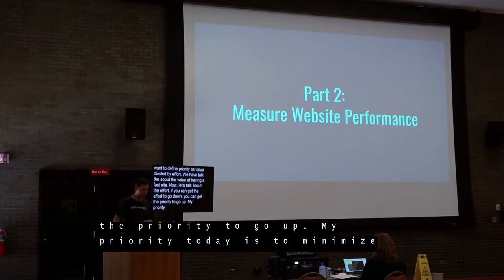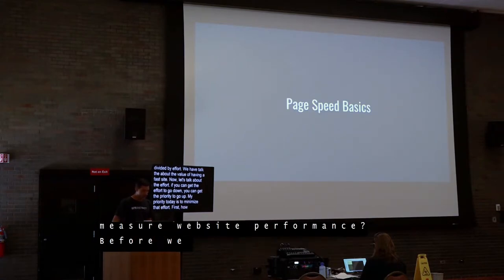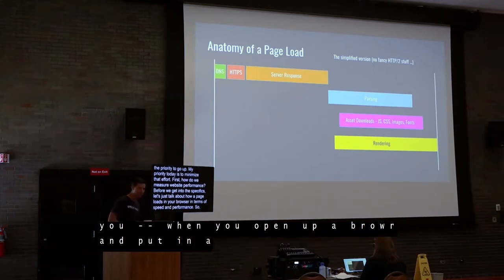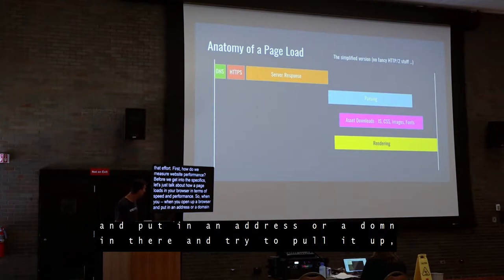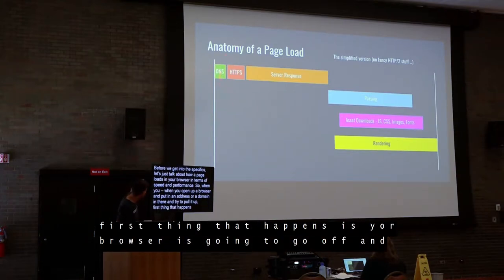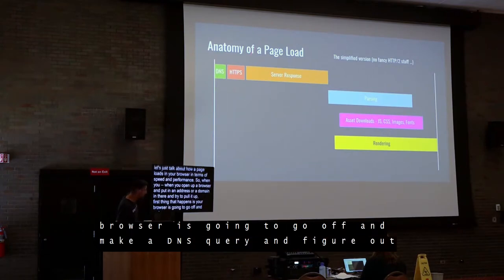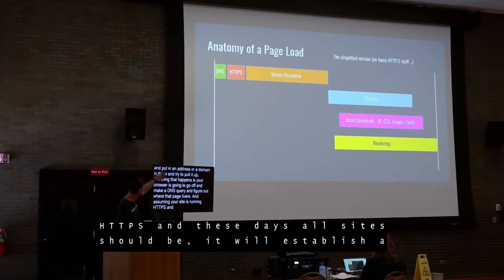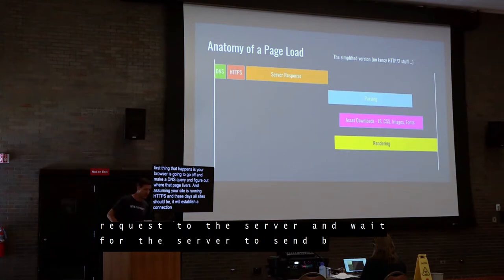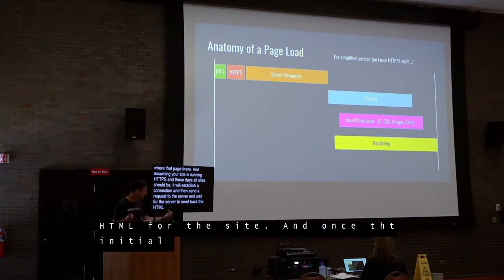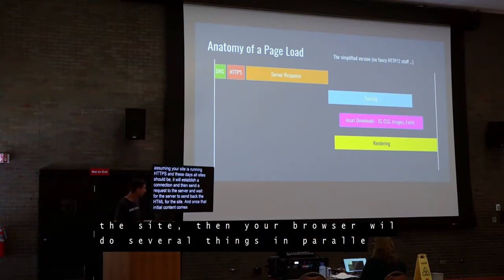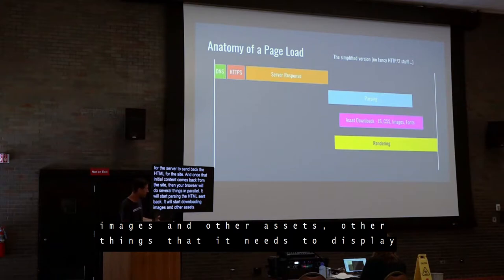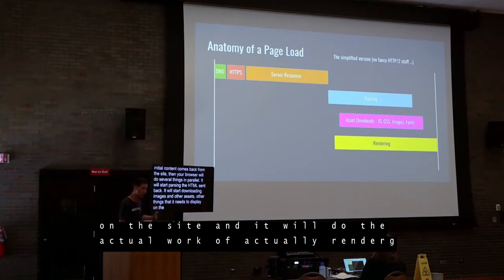How do we measure website performance? Before we get into the specifics, let's talk about how a page loads in your browser. When you open a browser and enter a domain, first your browser makes a DNS query to find out where that page lives. Then, assuming your site is running HTTPS — and these days all your sites should be — it will establish a secure connection, send a request to the server, and wait for the server to send back the HTML. Once that initial content comes back, your browser will parse the HTML, start downloading images and other assets, and do the actual work of rendering and painting what's on the page.